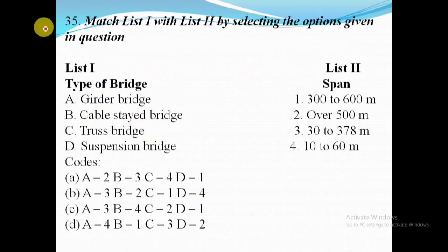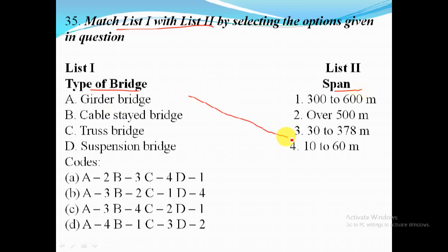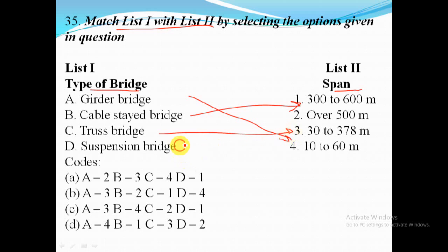Matching bridge types with their spans: girder bridge — 10 to 60 meter; cable-stayed bridge — 300 to 600 meter; truss bridge — 30 to 378 meter; suspension bridge — over 500 meter. For this question, option D is the correct answer.